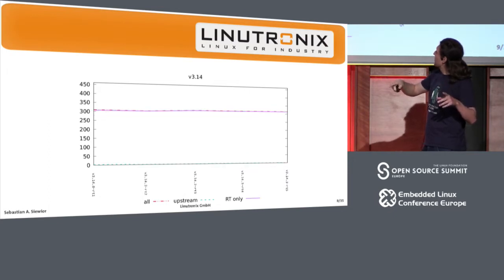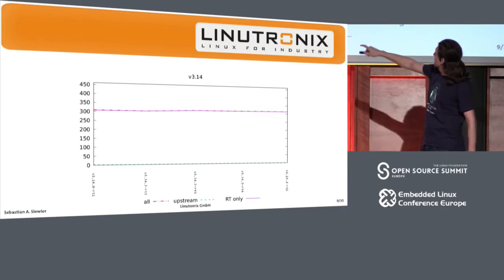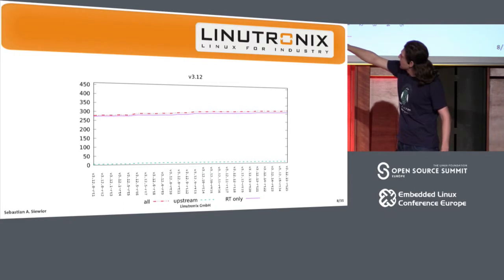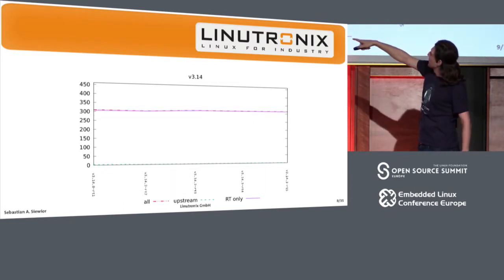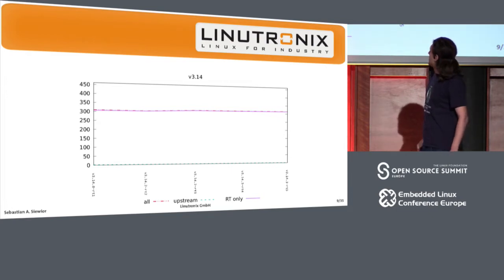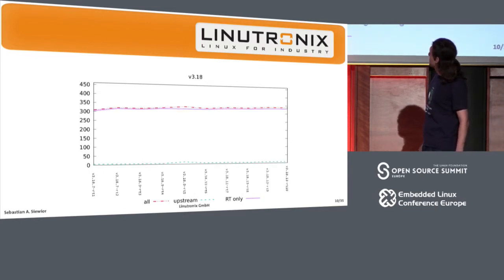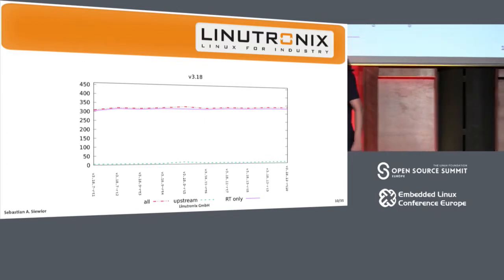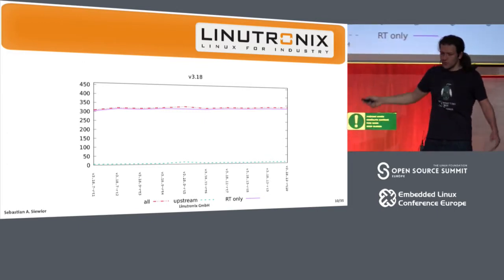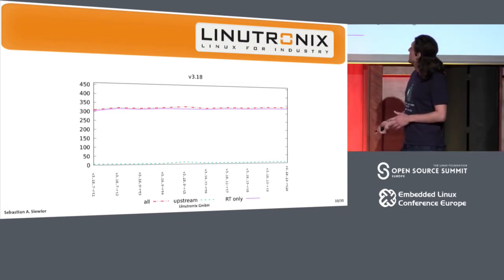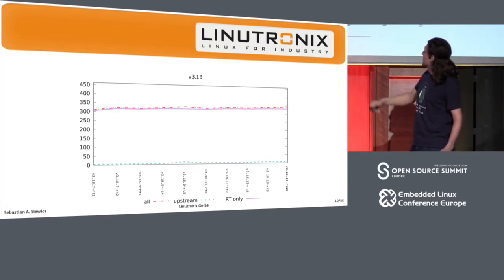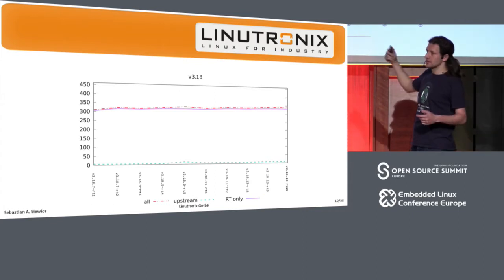Then we moved to 3.13 — only a few releases, nothing more. Back in 3.12, I managed to get a few patches around RCU upstream, which then landed in 3.14. But except for that, there was not much in terms of development. After that we had 3.18 — there was a small spike around RCU, which was most likely some bugs I found, submitted upstream, and then got removed once we pulled in 3.18.